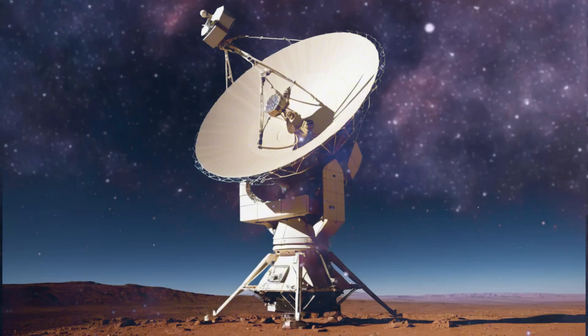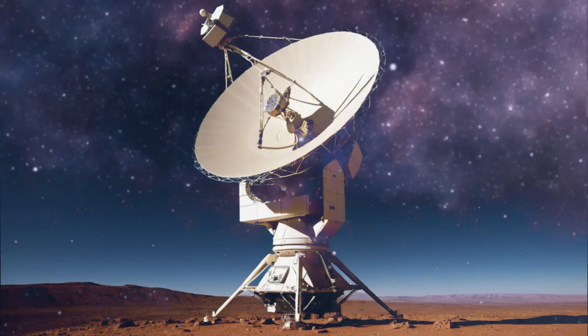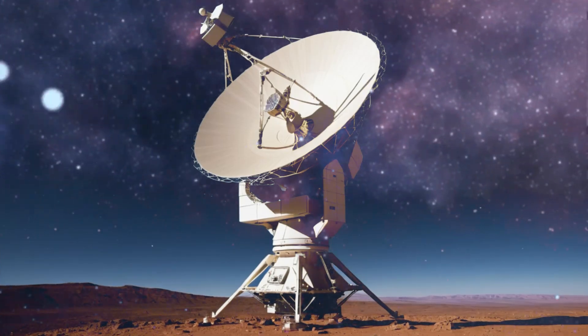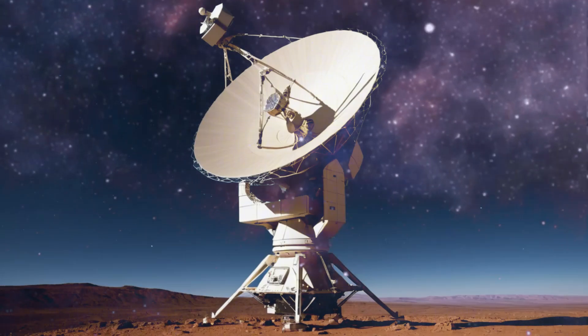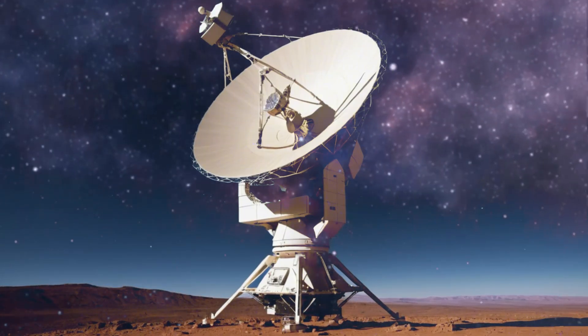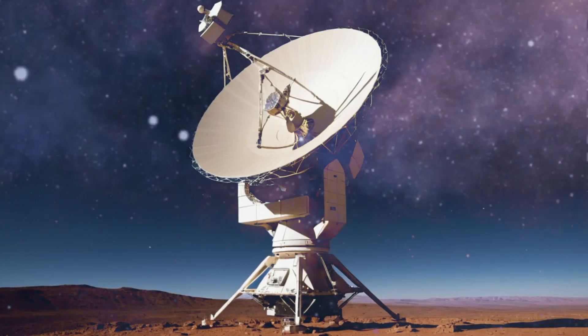This implies that we may not be centuries away from witnessing Betelgeuse's supernova. It could happen within the next few decades, or perhaps even sooner. By April 2023, astronomical observations indicated that Betelgeuse had returned to its normal brightness levels, leading many to believe that the dimming period had ended.